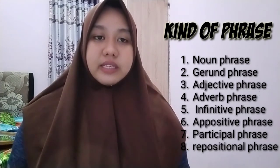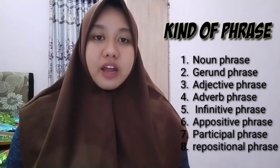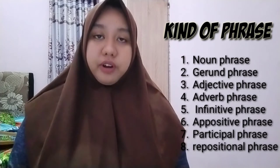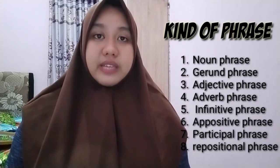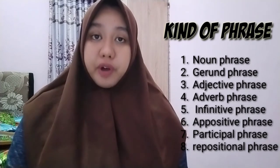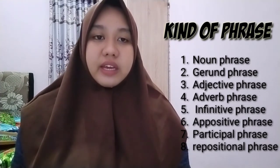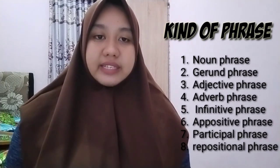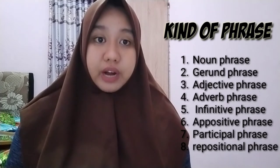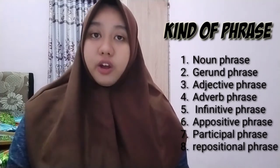And the fifth is infinitive phrase. An infinitive phrase is a phrase consisting of an infinitive, object, and/or modifier. For example, in the sentence 'to run through the rain.' The sixth is appositive. An appositive is a word or phrase that has the function of explaining or describing the noun or pronoun. For example, 'a girl in a long skirt.'